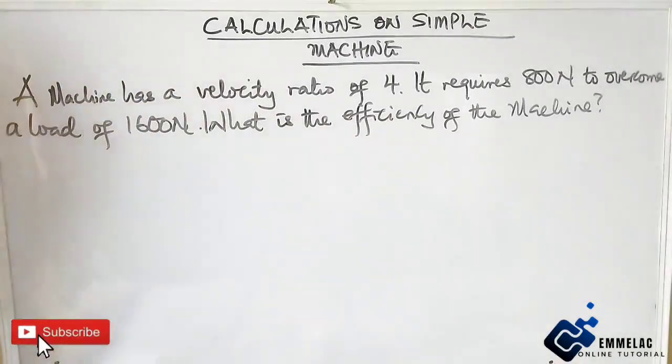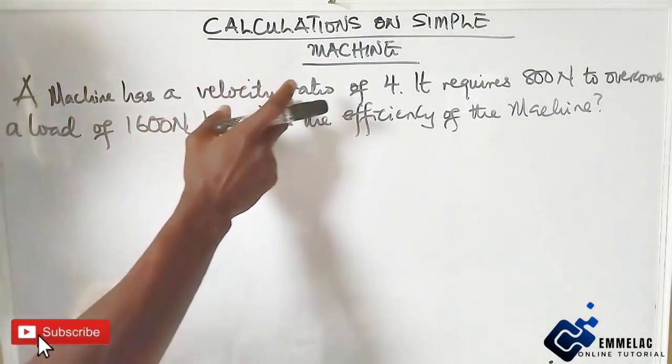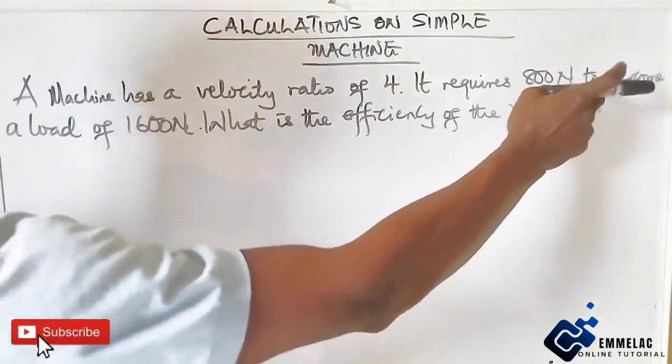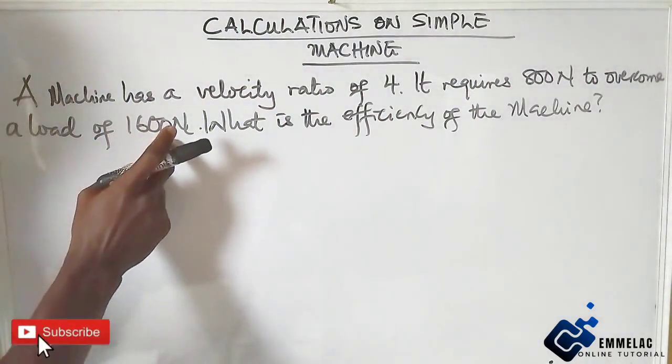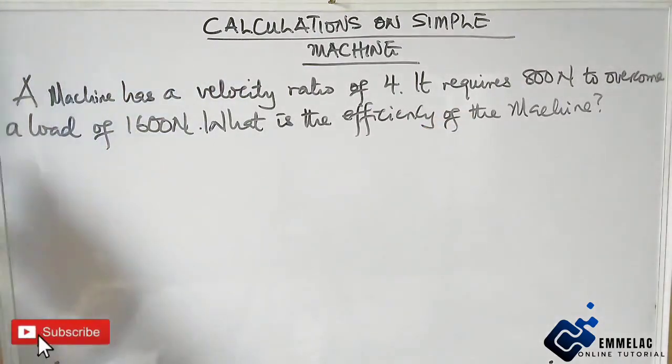Welcome to Emelac online tutorial. Before us is this question in simple machine. A machine has a velocity ratio of 4. It requires 800 Newton to overcome a load of 1600 Newton. What is the efficiency of the machine?